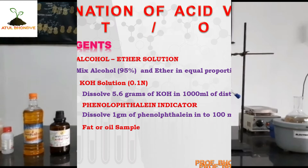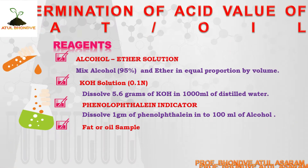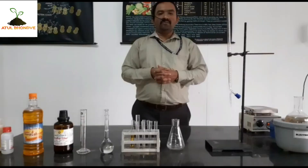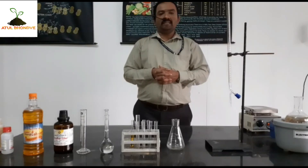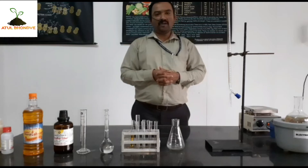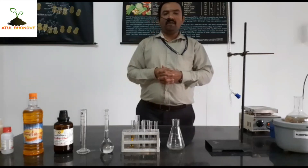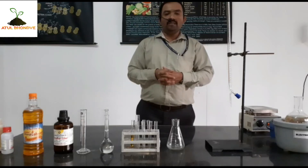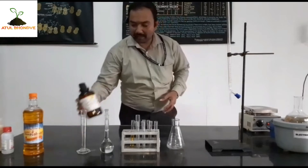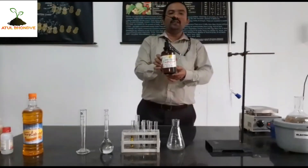The reagents required for today's practical are in front of you. The first and most important reagent, which we have already used in a previous practical for determination of saponification value, is the alcohol-ether solution — pure 95% alcohol and ether mixed in equal proportion. We have already prepared this solution.